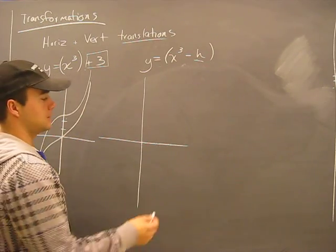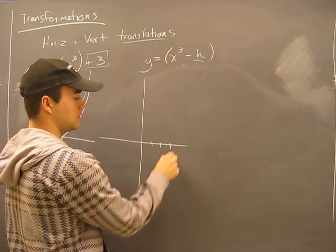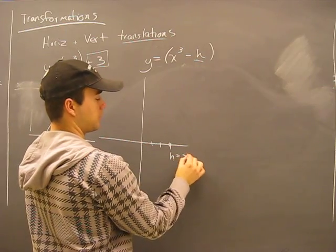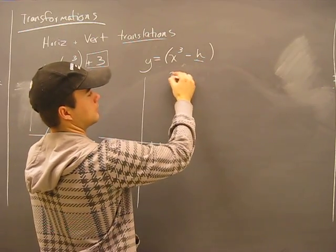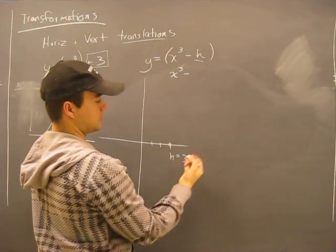Okay, positive three units. That means that h will be three. Well, h is three.